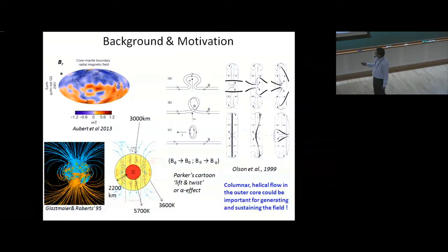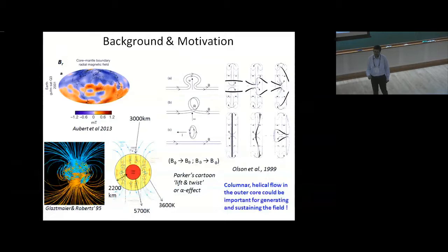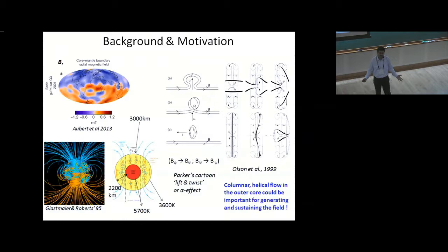One idea is that the motion of fluid in the outer core creates the magnetic field. The motion is said to be very turbulent and chaotic, but the magnetic field is surprisingly very regular and organized — you have a distinct north pole and south pole, which approximately coincide with the geographic poles. This has been observed consistently for a long time, and the field has not decayed, so it is long-lived and sustained.